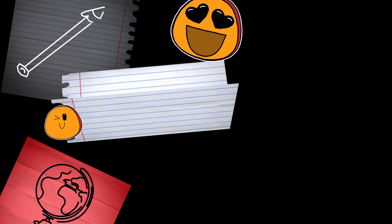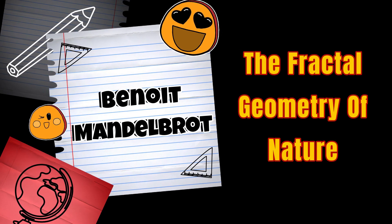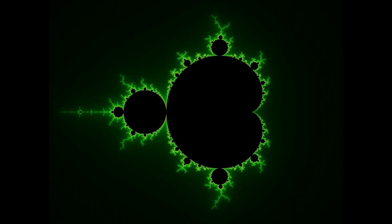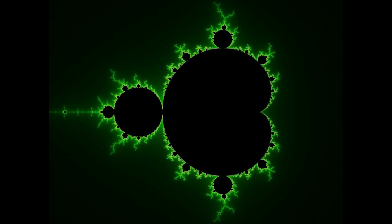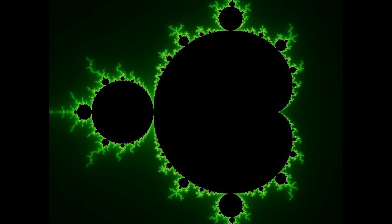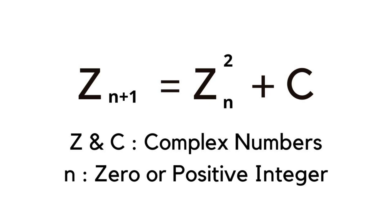Fractal geometry can exactly describe these objects. Benoit Mandelbrot, in his book 'The Fractal Geometry of Nature,' helped introduce this concept. He also introduced something called the Mandelbrot set — a set of complex numbers in a sequence that does not approach infinity. It can be explained with the equation Z_{n+1} = Z_n² + C, where C and Z are complex numbers and n is 0 or a positive integer.